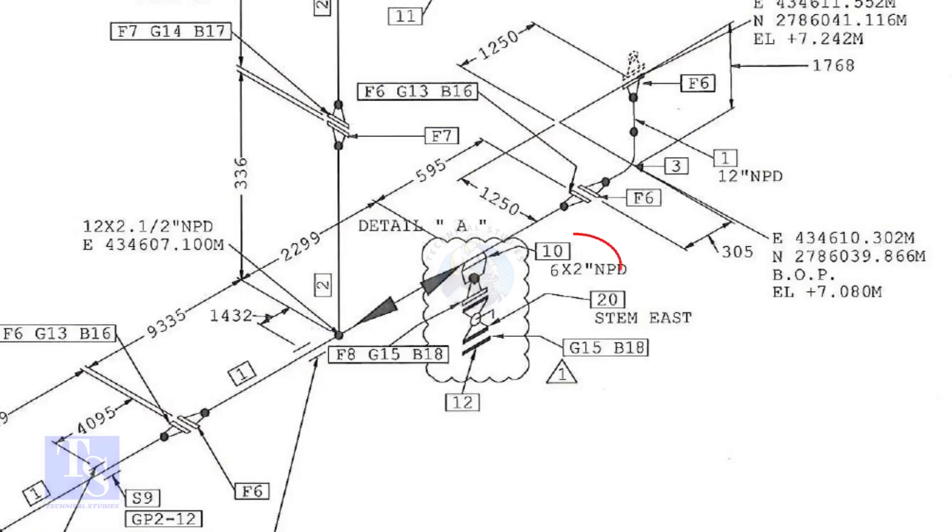In this drawing, the size of the weld-olet is 6 inch into 2 inch. Let us check what is item number 10 in the description.